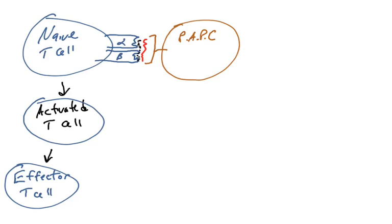If it's a CD8 effector cell, it'll be cytotoxic and go hunt down cells that are presenting that peptide and kill those cells. If it's a CD4 effector cell, it will release cytokines that will control the immune response.